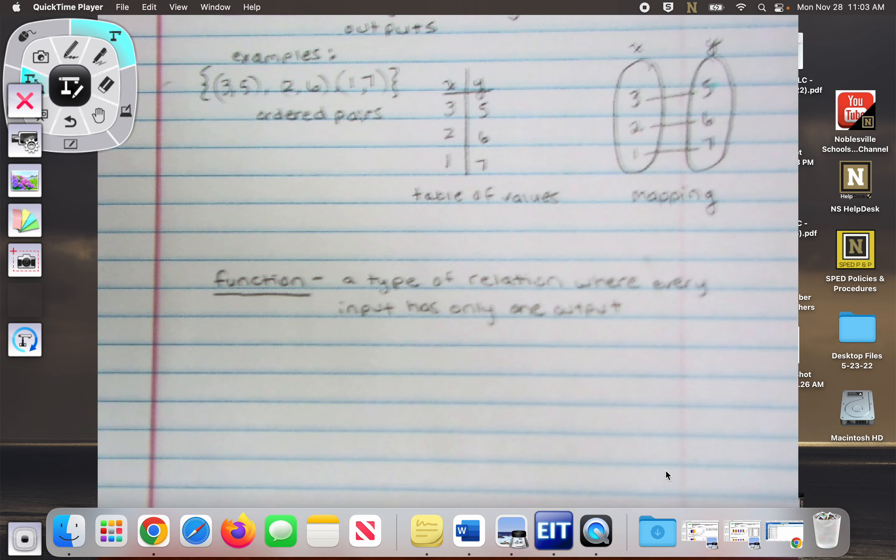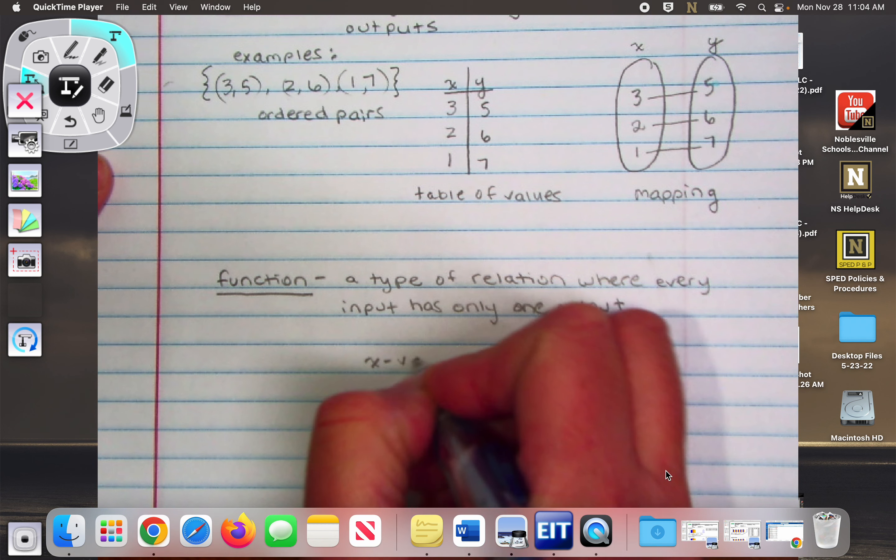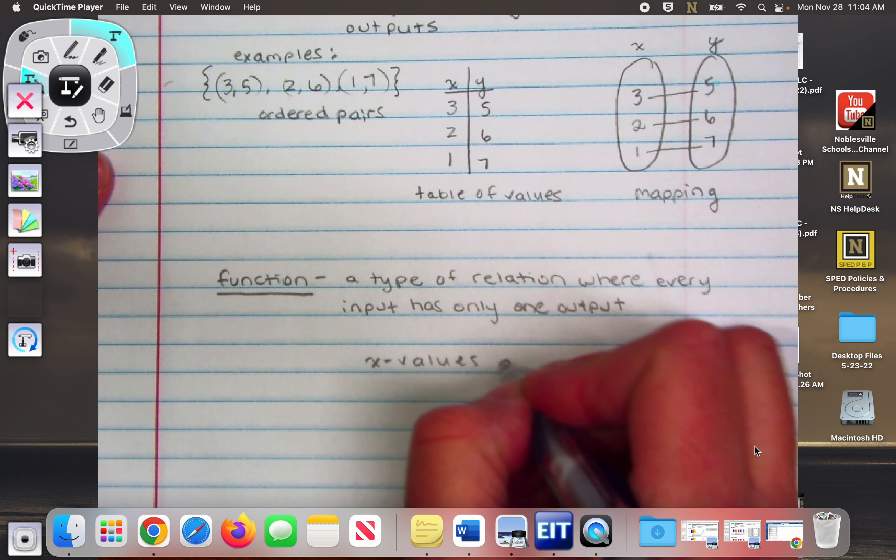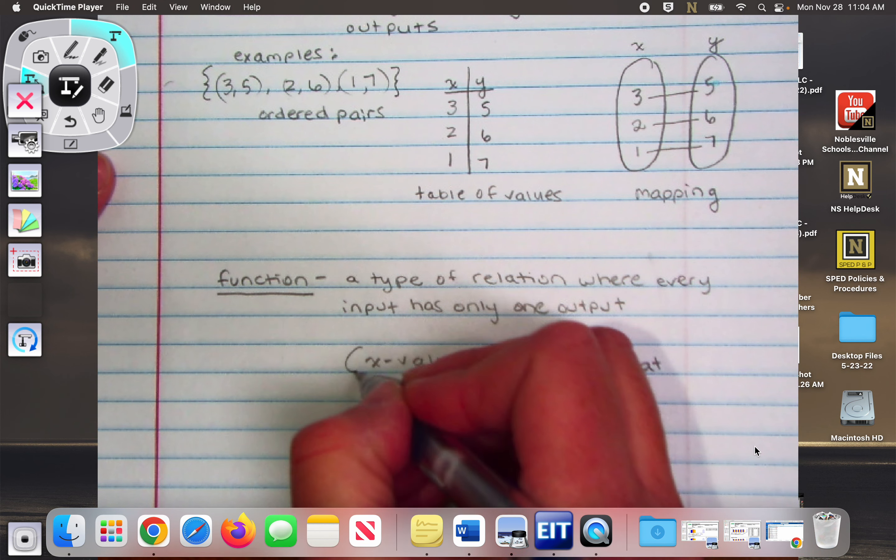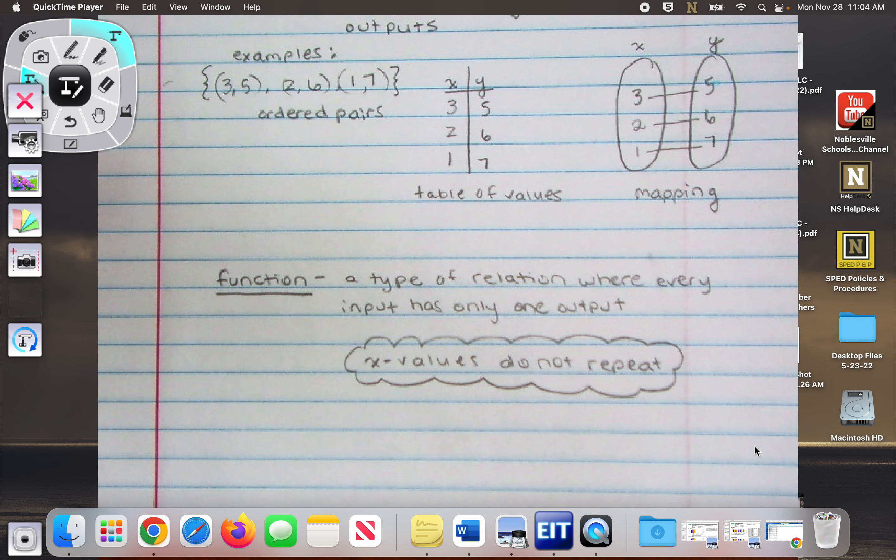Okay? So that sounds like kind of confusing, but there's a very easy way to look at this and determine it. Okay? Okay. The shortcut easier to understand definition of every input has only one output is that x values do not repeat.